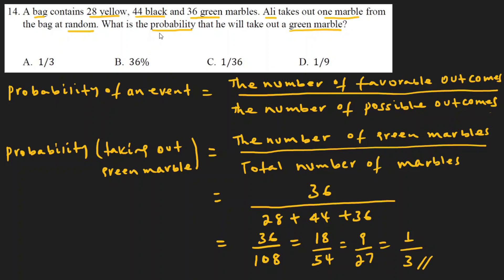The probability that Ali will take out a green marble from a bag containing 28 yellow, 44 black, and 36 green marbles is 1 over 3. The probability that Ali will take out a green marble is 1 over 3.